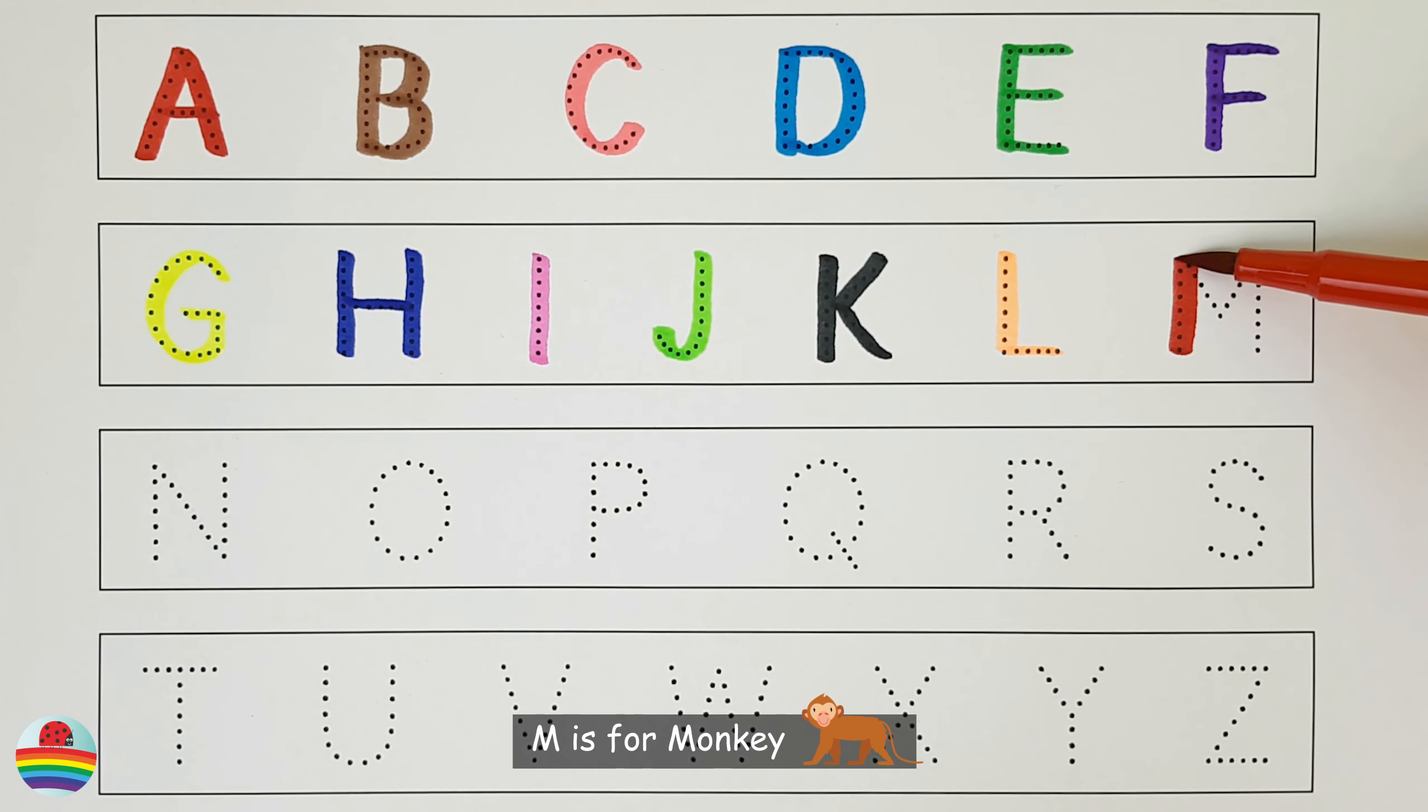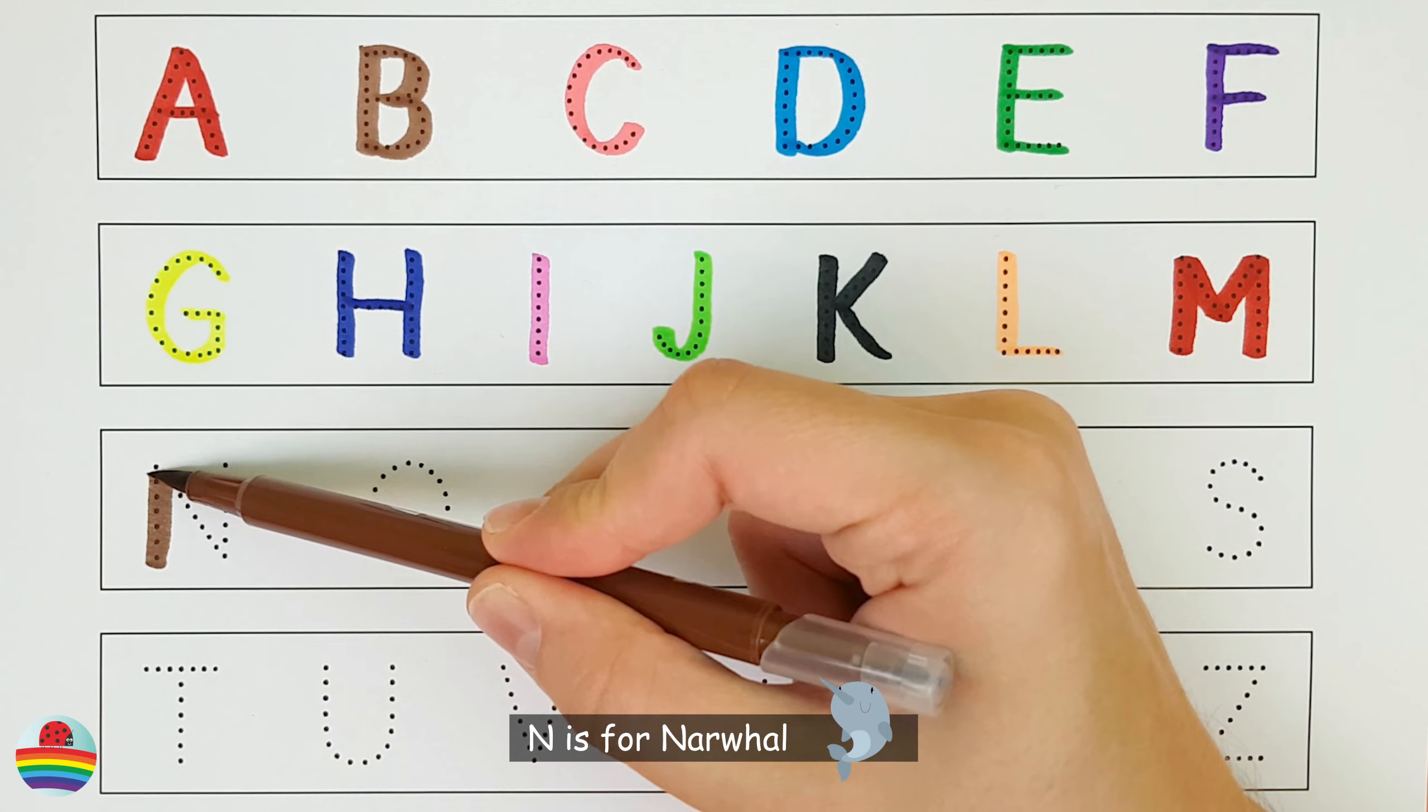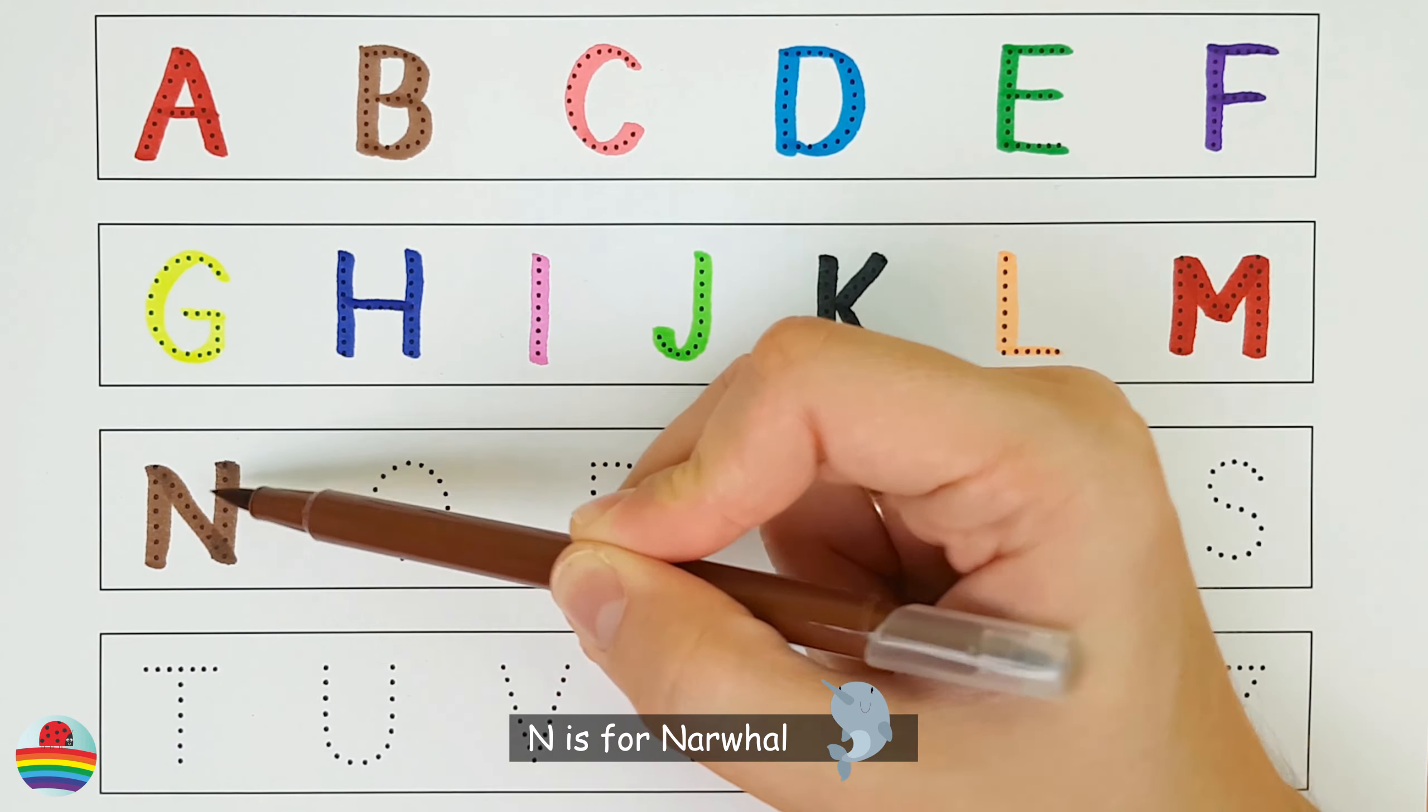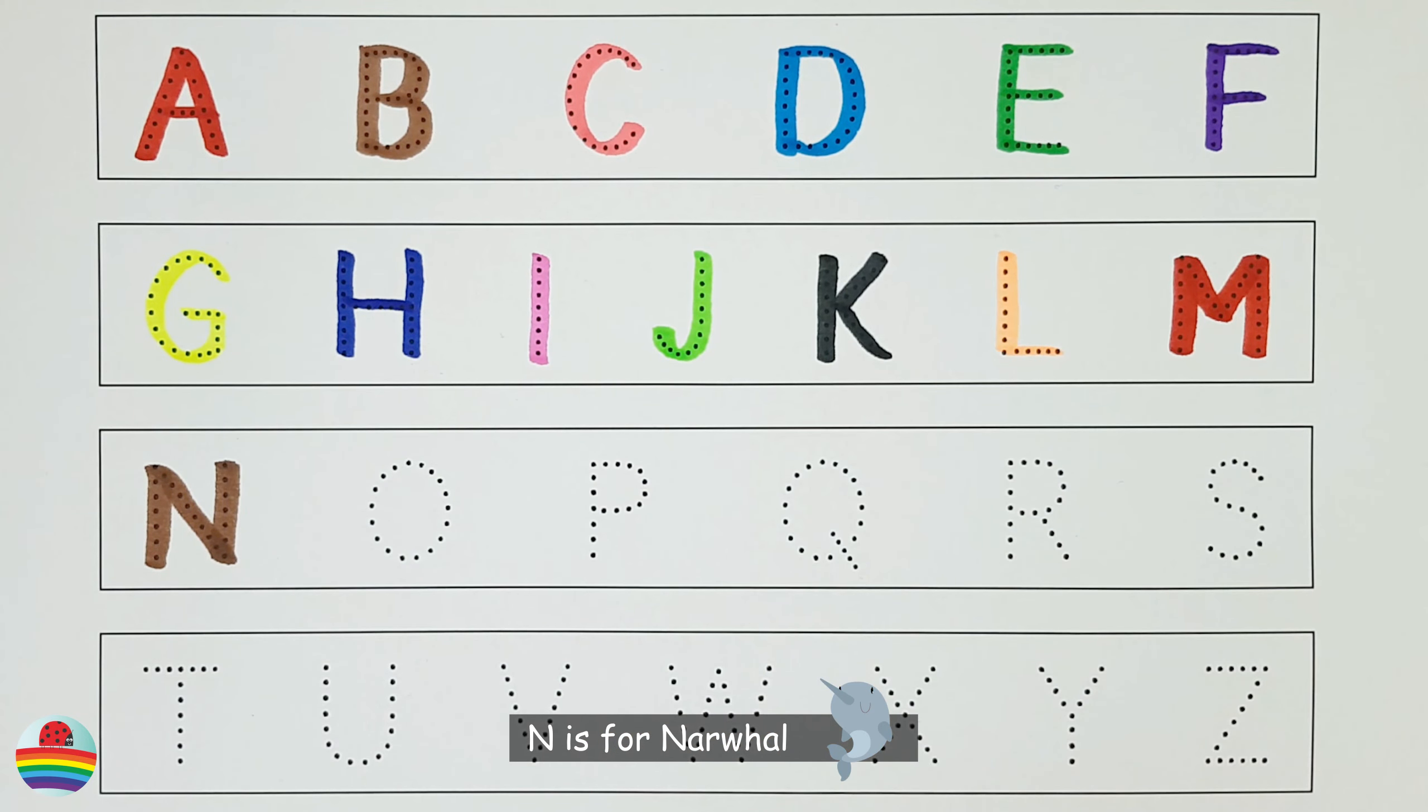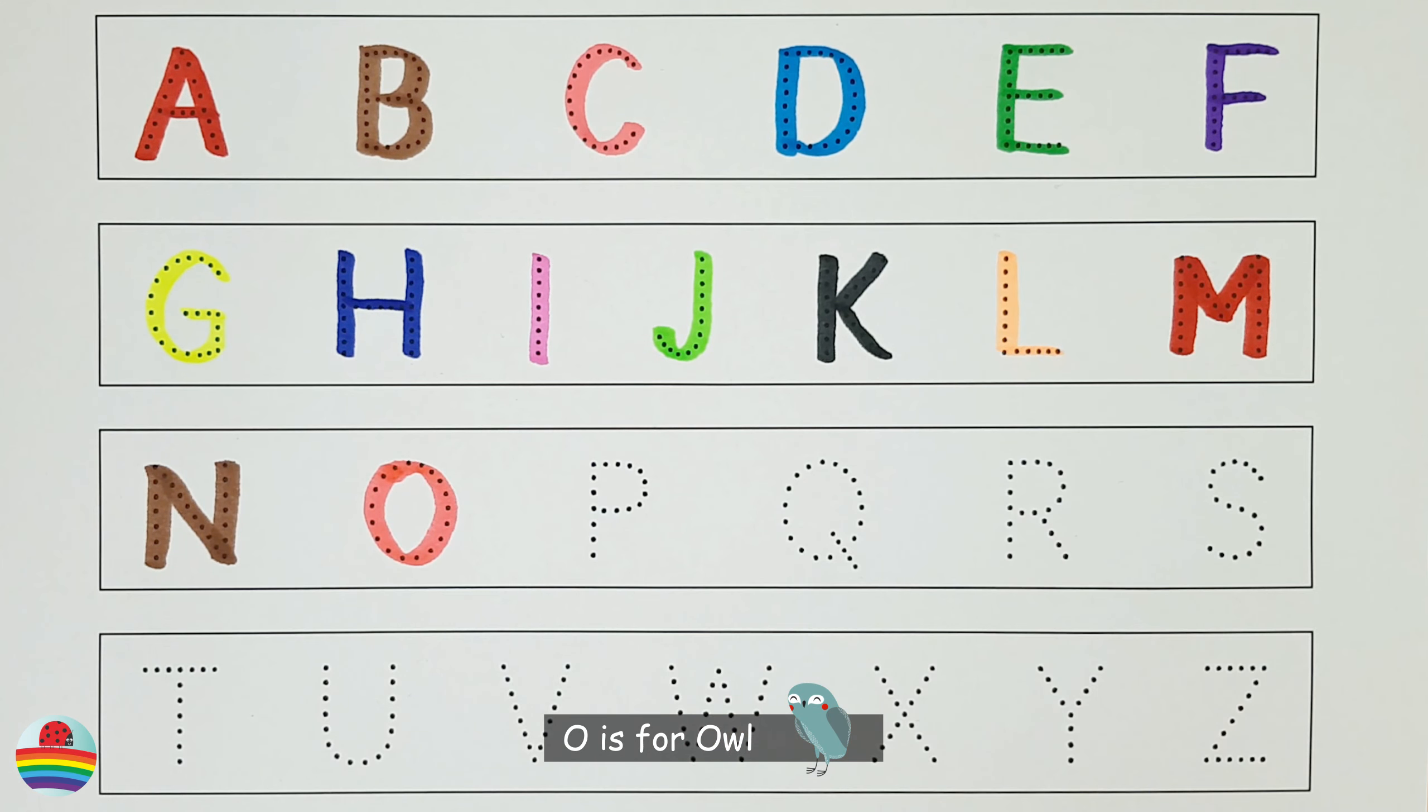M. M is for Monkey. M. N. N is for Narwhal. N. O. O is for Owl. O.